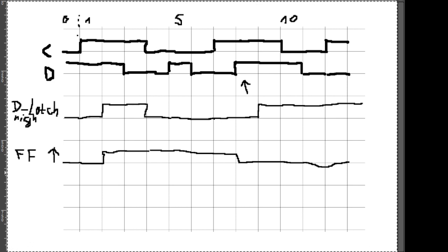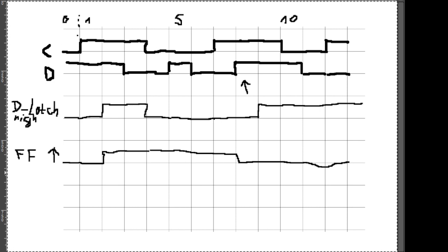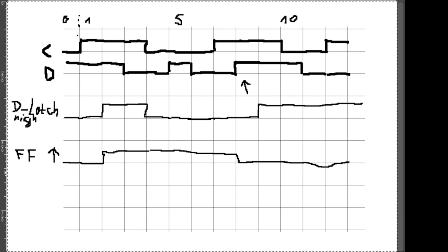Die Methode lautet: if Rising Edge C → P gleich D, und if Falling Edge C → Q gleich P. Schauen wir uns das stückweise an. If Rising Edge – also bei einer Vorderflanke P gleich D – was heißt das? Was passiert bei einer Vorderflanke?